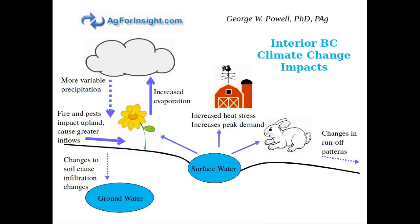With climate change we've seen some significant changes to the water cycle and its impacts on farm-level processes. In the interior of BC, for example, we're seeing much more variable precipitation — the volume of water and when that water arrives has been changing. Increased heat stress is increasing the demand for water by crops and stock, and that increased evaporation is also creating episodic drought where it didn't occur before.